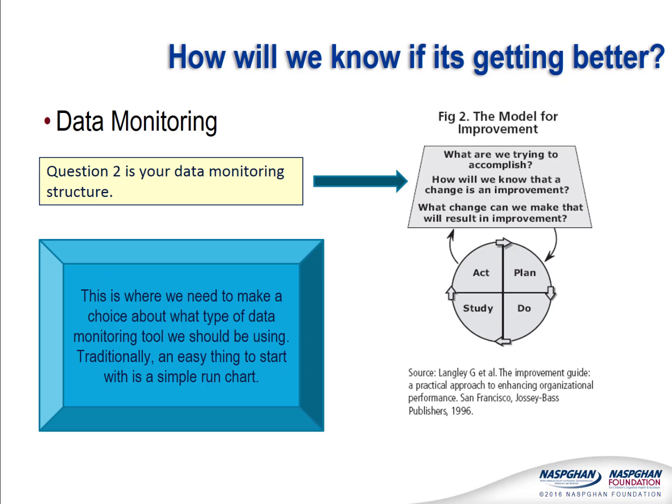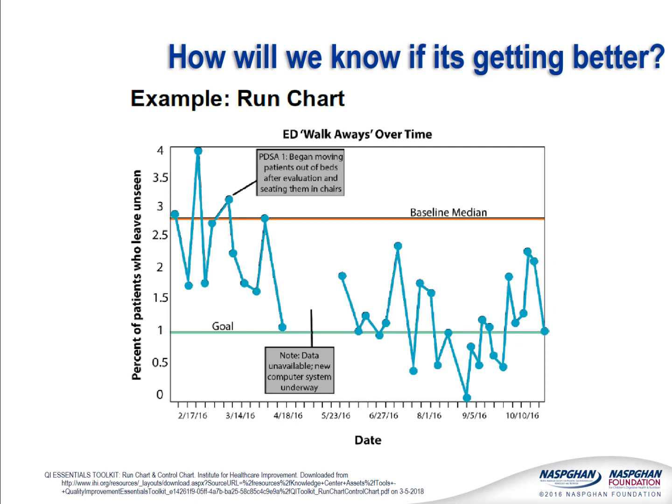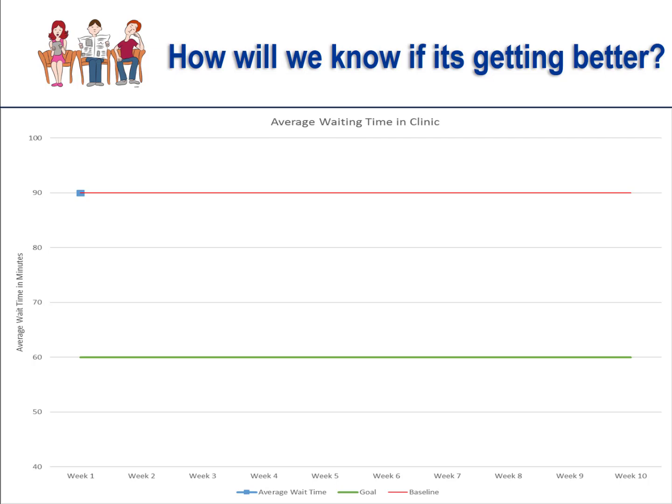As stated before, question two in the Model for Improvement is about data monitoring and measurement — what signs will we see to know that our changes have had a positive effect? This is where we need to make a choice about what tool we will apply to our data to monitor for improvement. Traditionally, the simplest form is a run chart — a simple line graph or time series with the measurement of interest on the Y-axis and time on the X-axis, with a center line (usually the median) and a goal line. Here, we have begun our run chart for clinic waiting time. We have established our baseline and first data point to be 90 minutes, which is the red line, and our goal to be 60 minutes, which is the green line. We will continue to return to this chart as we progress in our quality improvement journey and test interventions to change the system.